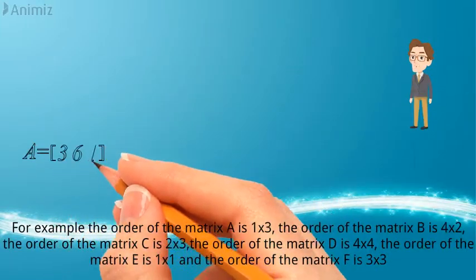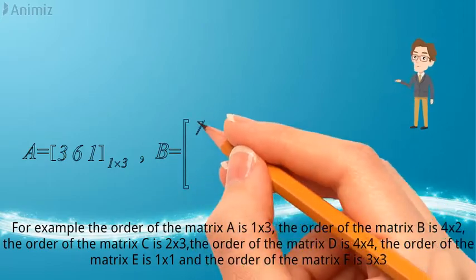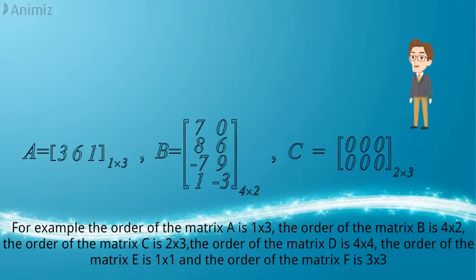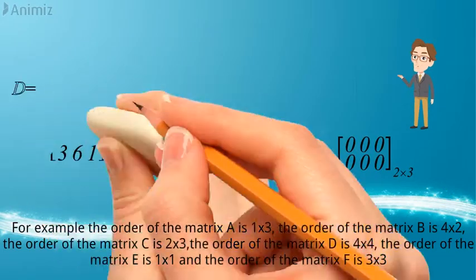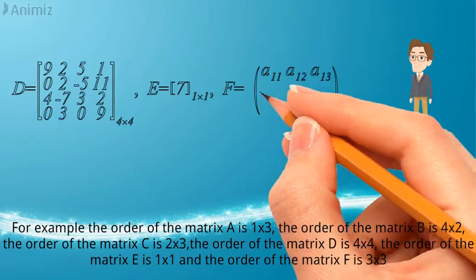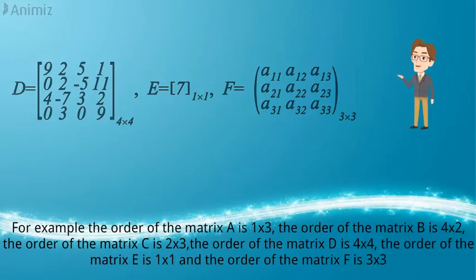For example, the order of the matrix A is 1 by 3, the order of the matrix B is 4 by 2, the order of the matrix C is 2 by 3, the order of the matrix D is 4 by 4, the order of the matrix E is 1 by 1, and the order of the matrix F is 3 by 3.